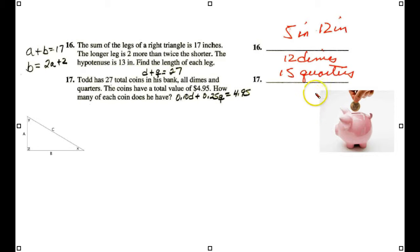Going on now to part three of our word problems in two variables. We're going to look at number 16. It says the sum of the legs of a right triangle is 17 inches.